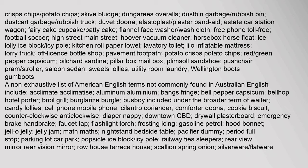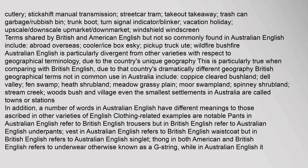A list of American English terms not commonly found in Australian English includes: aluminum (aluminium), bangs (fringe), bell pepper (capsicum), broil (grill), candy (lollies), cell phone (mobile phone), cilantro (coriander), comforter (doona), cookie (biscuit), diaper (nappy), downtown (CBD), faucet (tap), flashlight (torch), frosting (icing), gasoline (petrol), hood (bonnet), jello (jelly), math (maths), pacifier (dummy), parking lot (car park), popsicle (ice block/icy pole), streetcar (tram), takeout (takeaway), trash can (garbage/rubbish bin), trunk (boot), turn signal/blinker (indicator), vacation (holiday), and windshield (windscreen).